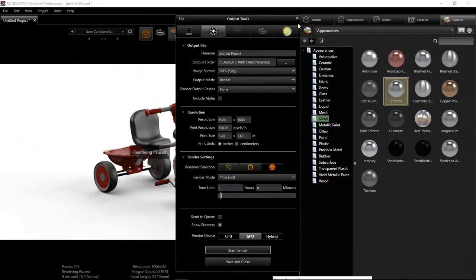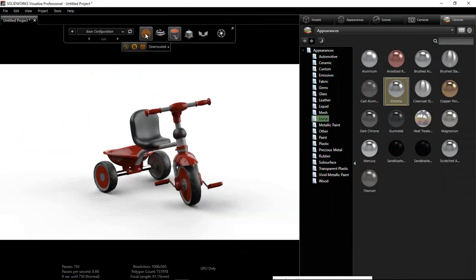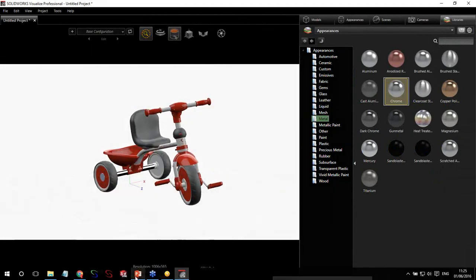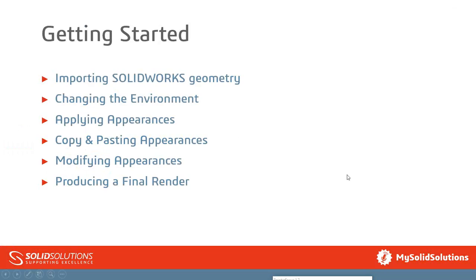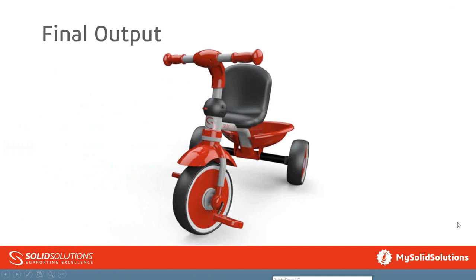Rather than sitting here doing the render, I'll jump to what I've already done. Let me quickly change back to Preview mode and go back to the PowerPoint. Here's my final output — I didn't spend too long rendering it, possibly about 15 minutes max. You've got some nice shiny red there — obviously the Solid Solutions red, it matches the red at the bottom of the slide. A quick and easy render: importing the geometry and producing this relatively quickly.